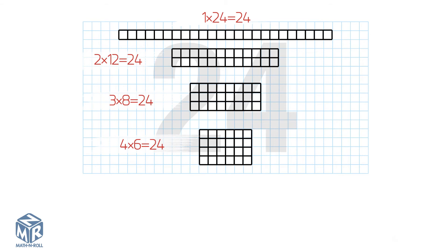We skipped 6 because we already had a 4 times 6 factor pair. If we drew an array with 6 rows, it would be the same array as 4 times 6 just flipped sideways.